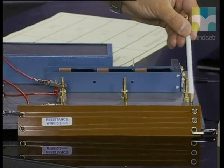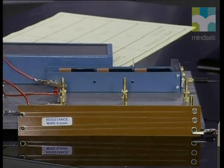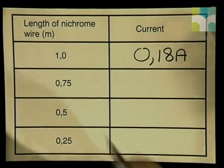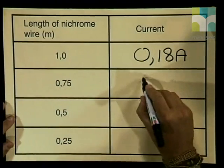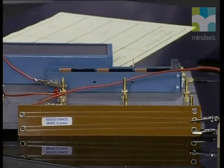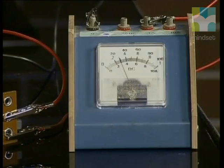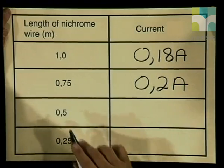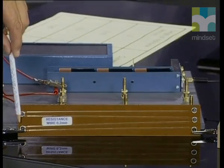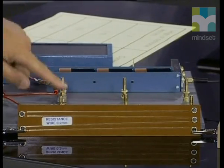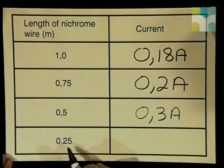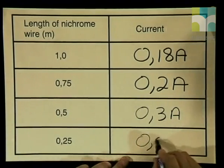I have now moved the connecting lead from the 1-meter position to the 0.75-meter position. Closing the switch, the ammeter reads 0.2 amperes. Moving to the 0.5-meter position and closing the switch, the ammeter is now reading 0.3 amperes. For my last reading, I have moved to the 0.25-meter position, closing the switch, and the ammeter is reading approximately 0.55 amperes.